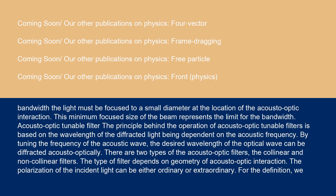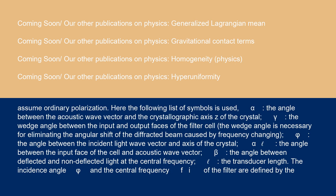There are two types of acousto-optic filters, the collinear and non-collinear filters. The type of filter depends on geometry of acousto-optic interaction. The polarization of the incident light can be either ordinary or extraordinary. For the definition, we assume ordinary polarization.